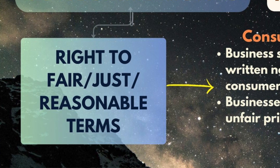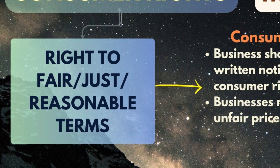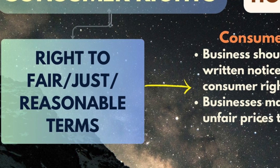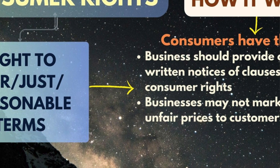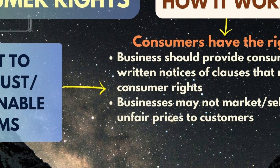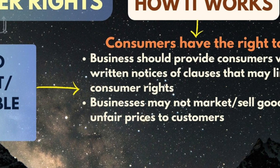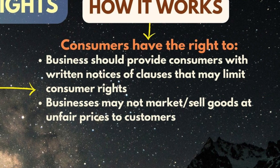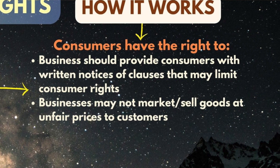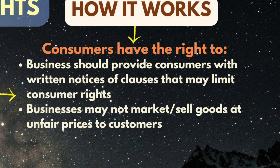The seventh right is the right to fair, just, and reasonable terms. This means the business should provide customers with a written notice of clauses that might limit customers' rights. The business may not market or sell goods unfairly or give unfair pricing of items.